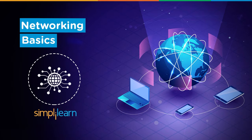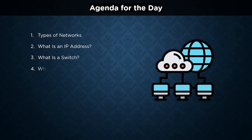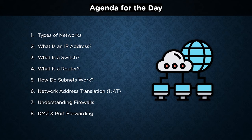Let's take a look at the things we will be covering today. We start by learning about the different network types and the importance of an IP address. Next we cover the significance of switches and the working of routers. Moving on, we cover subnets and the importance of network address translation or NAT. Finally, we understand how firewalls work and the distinct use cases of DMZs and port forwarding.